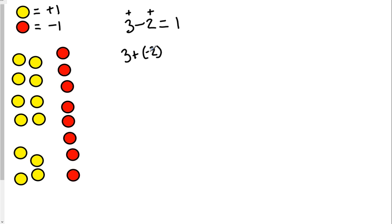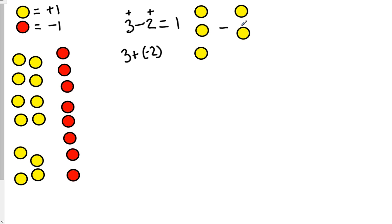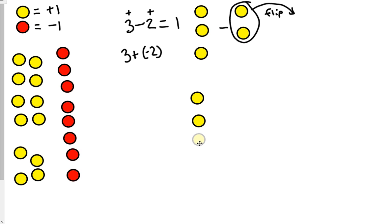Let me show you that visually. If you had 3 minus 2, you would start off with 3 yellow chips and you would have 2 more yellow chips, but you're not adding them — you are subtracting them. When you have a subtraction problem from now on, I want you to take the second number and flip it. If I flip it, this problem now becomes 3 yellows. Once I flip it, it becomes an addition problem. If I flip those chips' color, now they're red. So now it becomes 3 plus a negative 2.